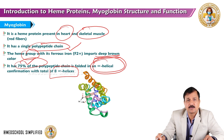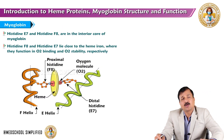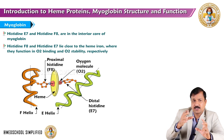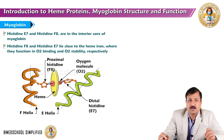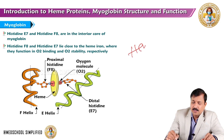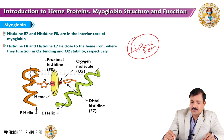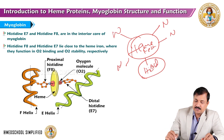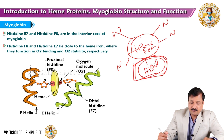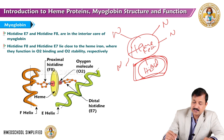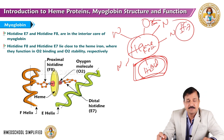The heme in myoglobin has ferrous iron in the center with six valencies. Four bind with the four nitrogen atoms of the porphyrin ring. The fifth valency binds with the proximal histidine, attaching the heme to the globin part of myoglobin. The sixth valency binds with oxygen, and the distal histidine — histidine E7 — stabilizes that oxygen molecule.